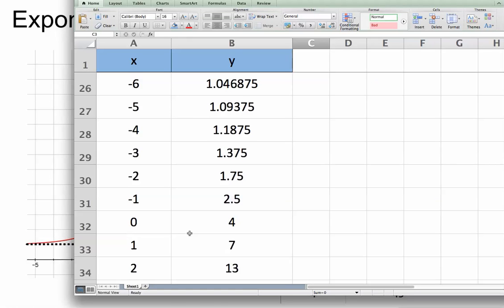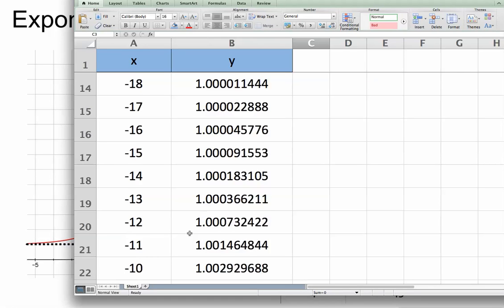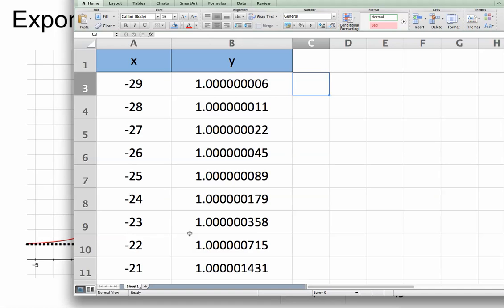What happens if I go the other way? We can see it decreasing, but it seems to be getting closer and closer to this value of 1. As I go to minus 30, you can see how close it gets to 1 without actually ever getting there.